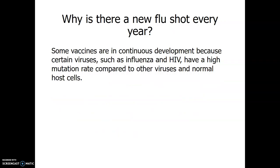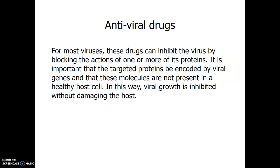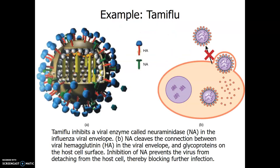Why do we get a new flu shot every year? That's because the influenza virus has a high mutation rate. Vaccines can in very few cases be used as treatment — you can give someone the vaccine to boost their immune system while they're fighting off the virus. But most of the time, viruses are treated with antiviral drugs. One example is Tamiflu — if you've had the flu in recent years, you may have been given a prescription for it.